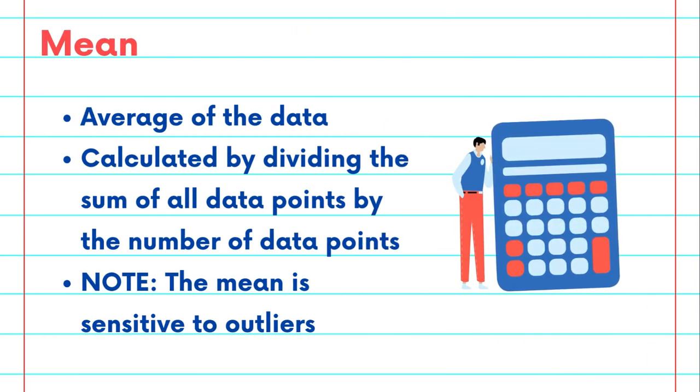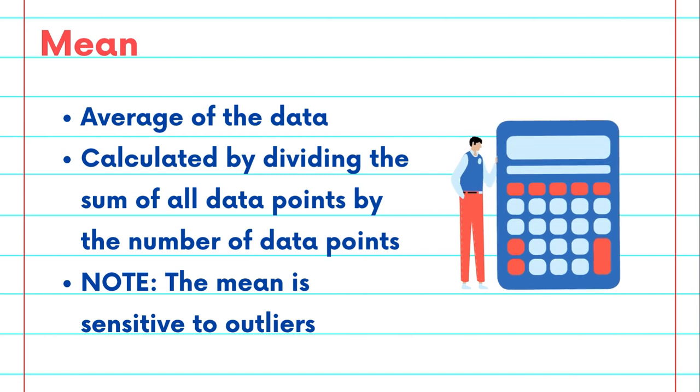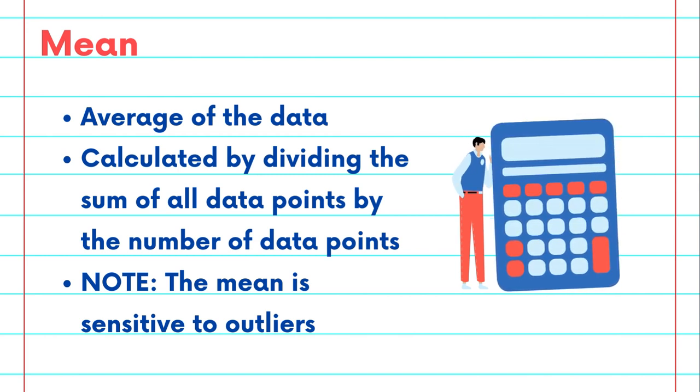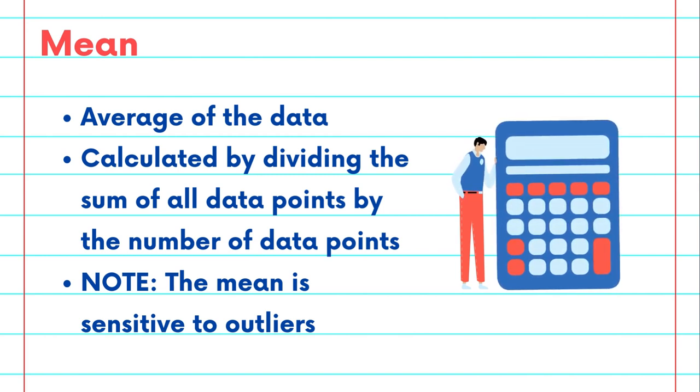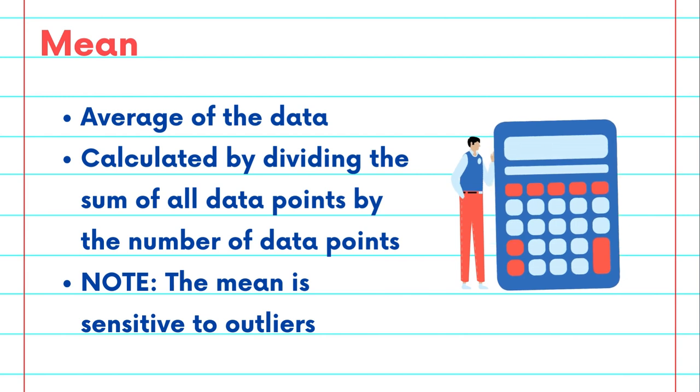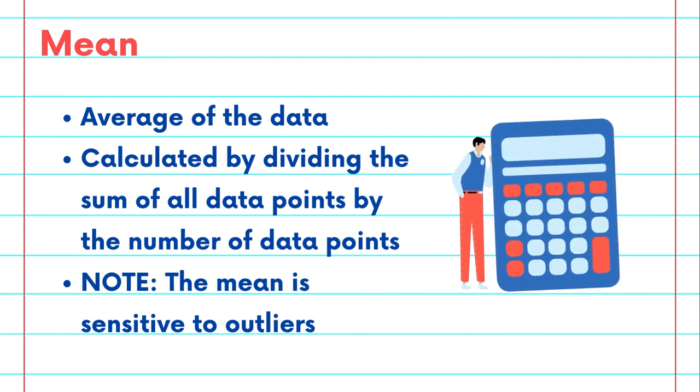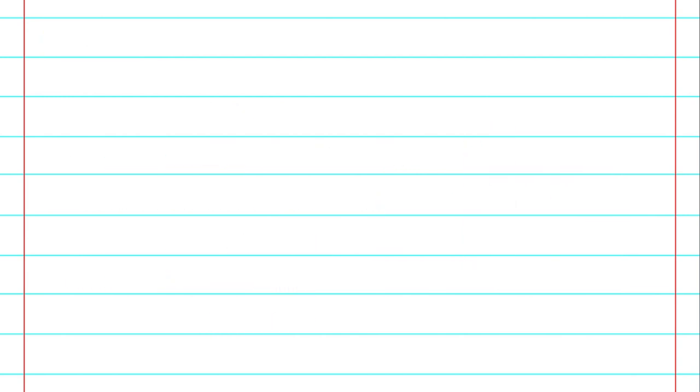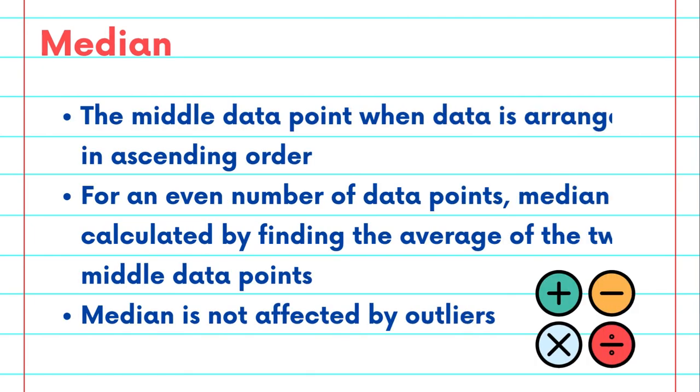The mean, or the average of the data, can be calculated by dividing the sum of all data points by the number of data points. It gives us an idea about the average value of the data, however, the mean is sensitive to outliers and may not always accurately represent the data.